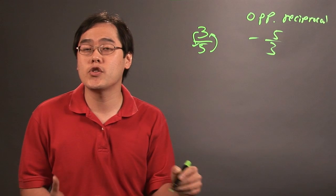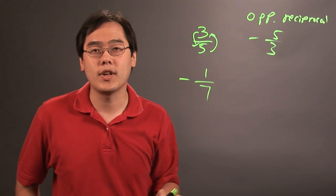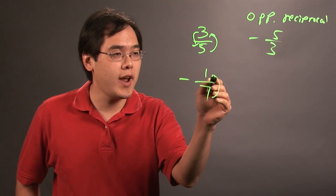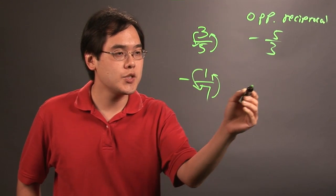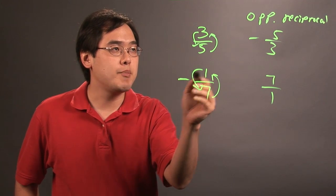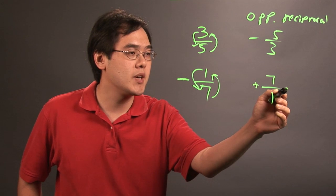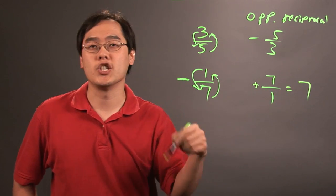The same holds true if you started out with a negative fraction, let's just say negative 1 seventh. So what you're going to do is you're going to flip the fraction, so it becomes 7 over 1, but the opposite is going to be opposite in sign, so the opposite of negative is going to be positive. So it's going to be positive 7 over 1, which is of course just 7.